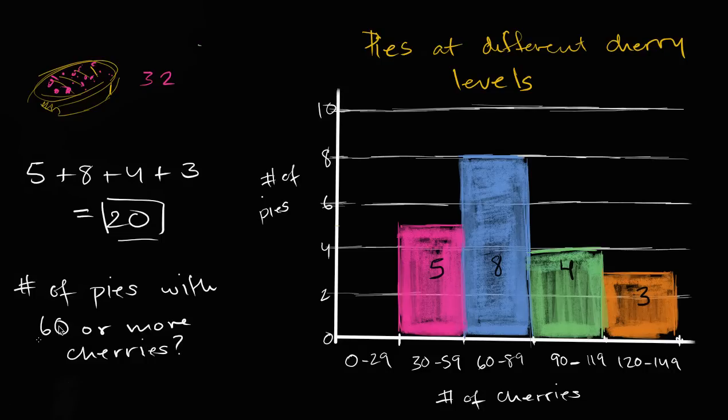So let's think about it. Well, this magenta bar doesn't apply because these all have less than 60. But all of these other bars are counting pies that have 60 or more cherries. This is 60 to 89. This is 90 to 119. This is 120 to 149.